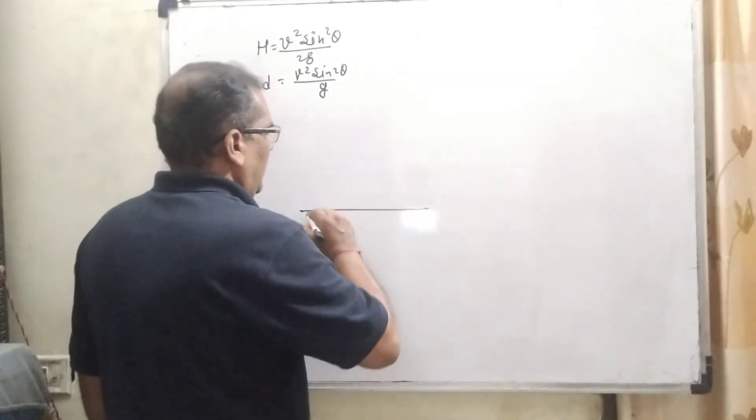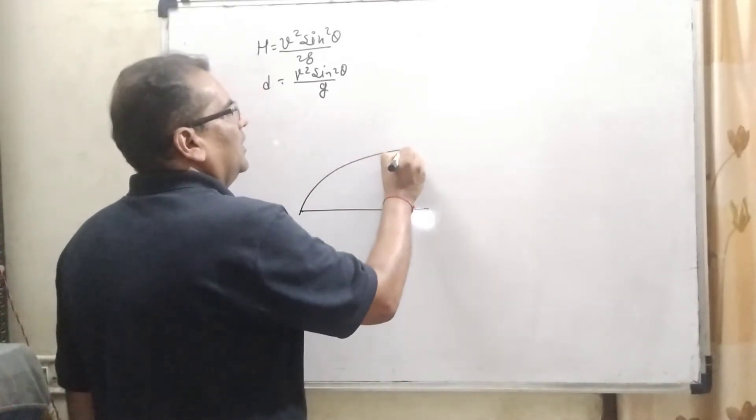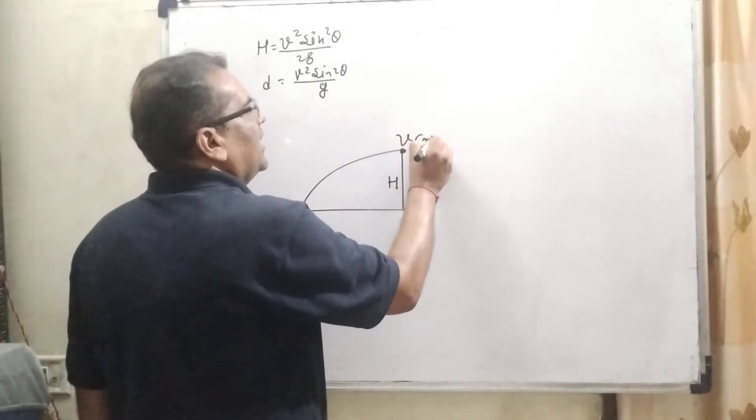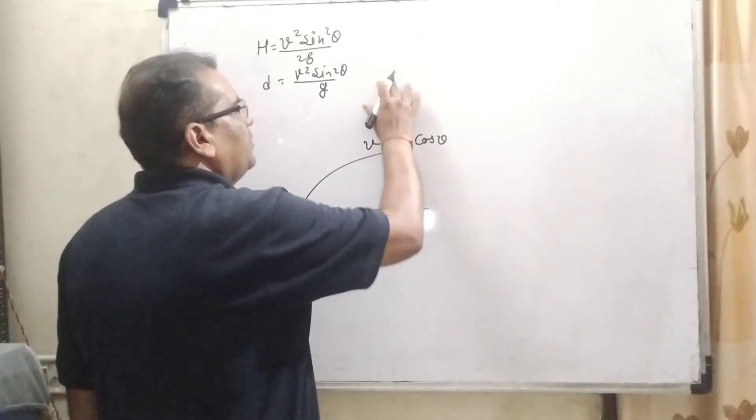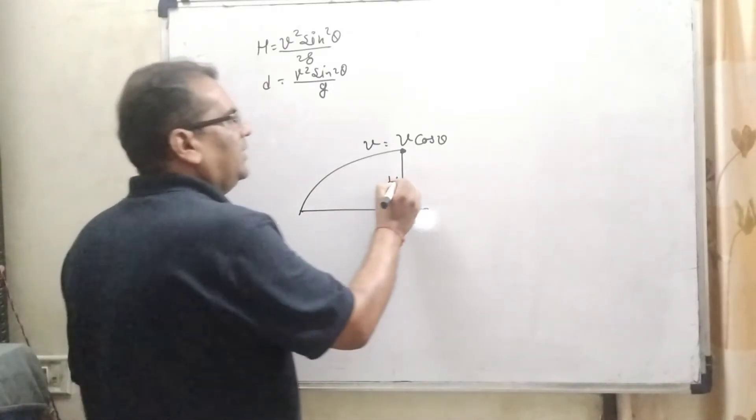Now here, at the moment, at maximum height, the component V cos theta is acting here because the perpendicular V sin theta component becomes zero at the maximum height.